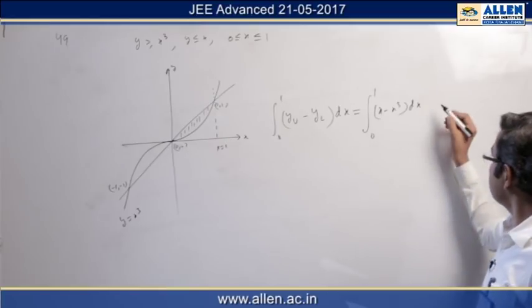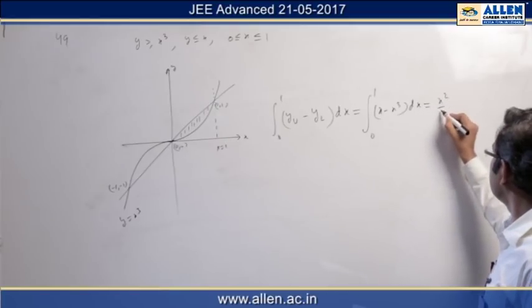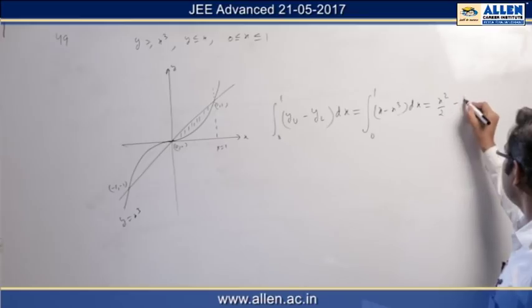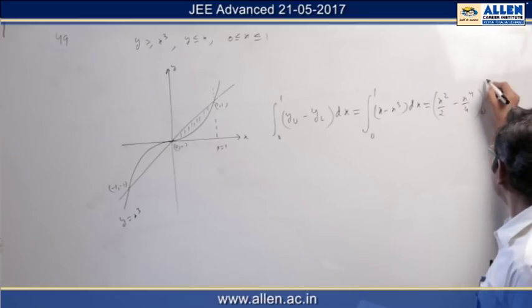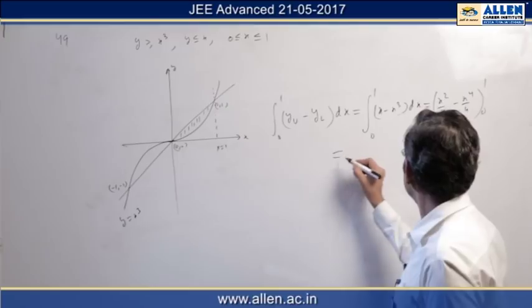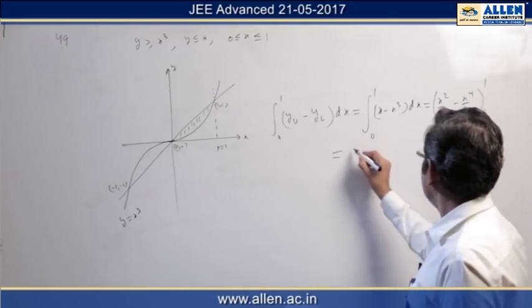Now integral of x is x²/2, and integral of x³ is x⁴/4. So let us plug 0 to 1. So we got 1/4.